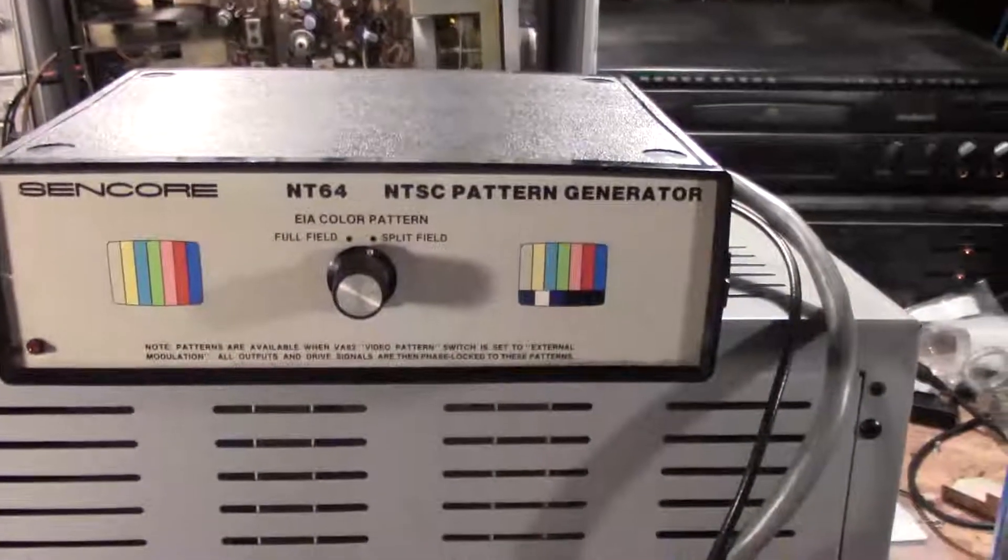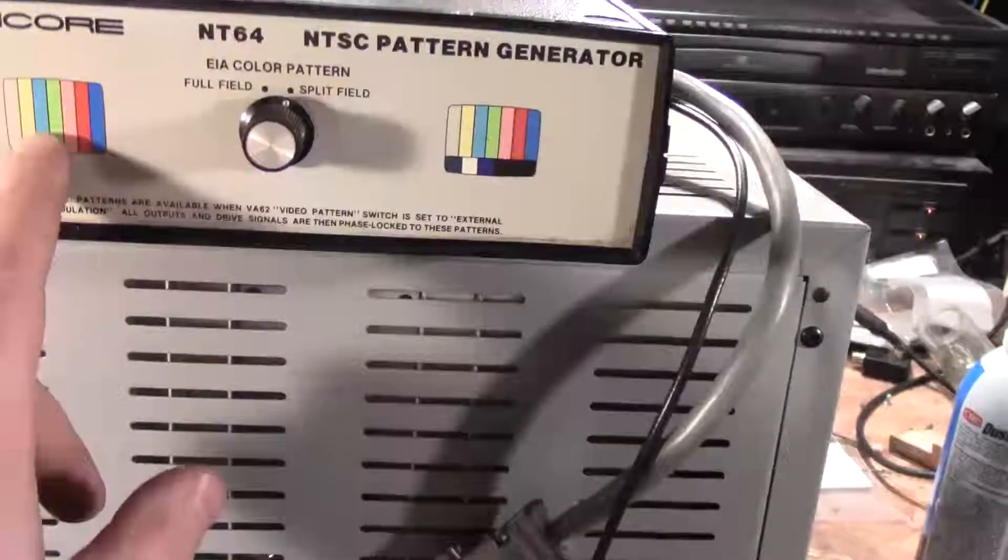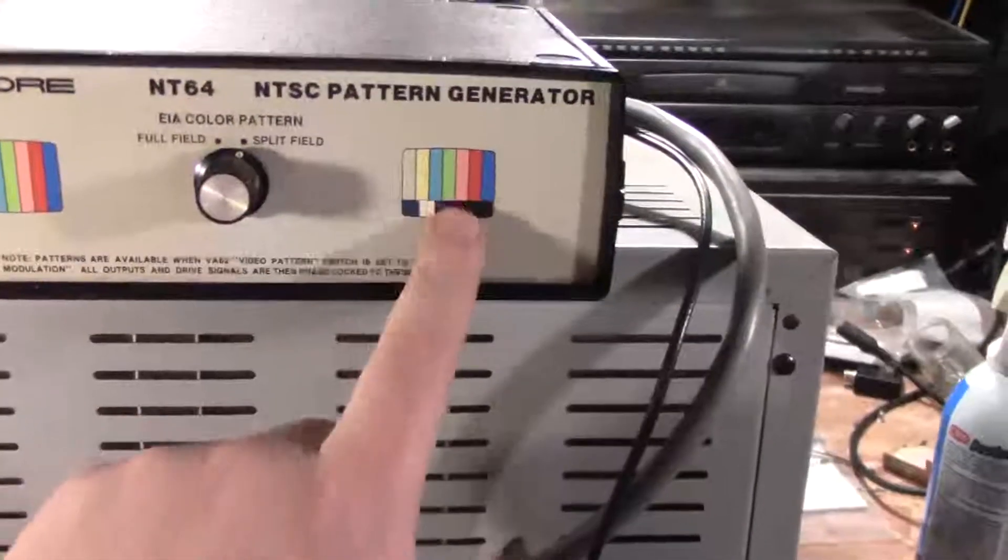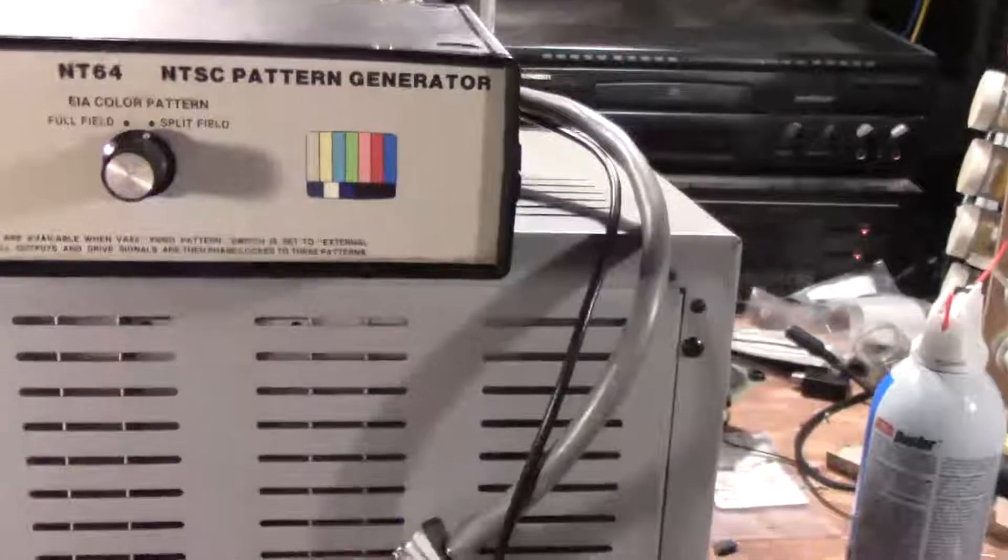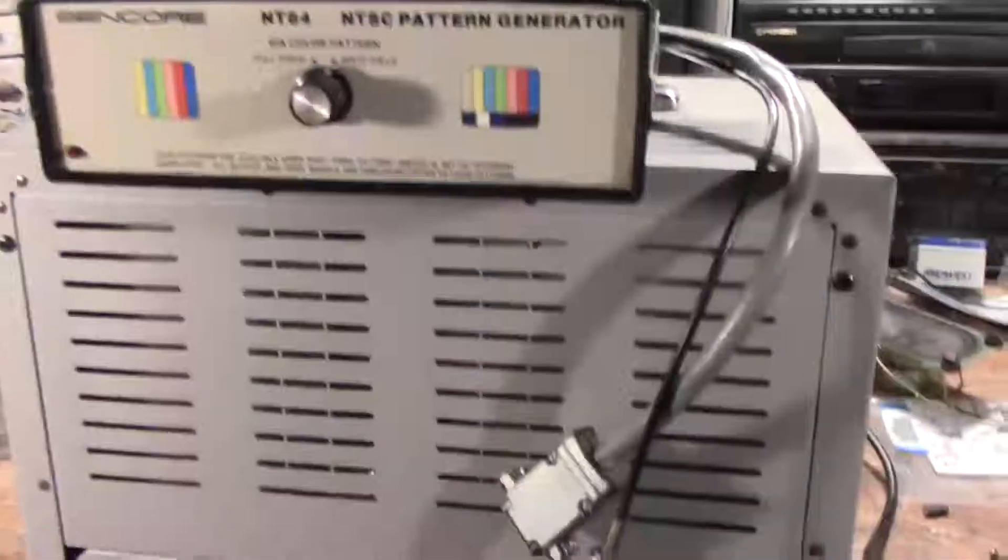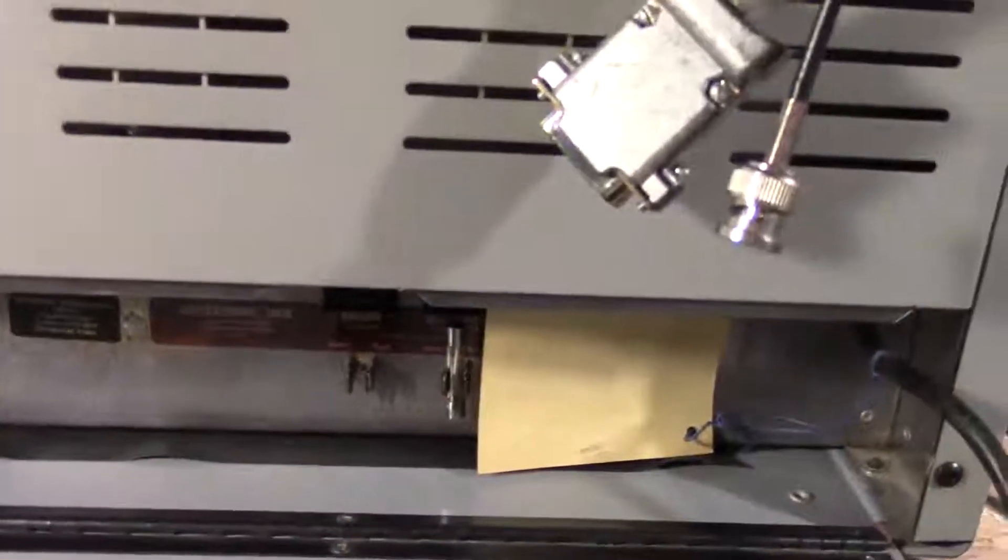Okay, I have the standard NTSC pattern generator, which selects the full field NTSC color bars or the split field with the white and black on the bottom. Now this plugs in down here, and I'm gonna show you what I'm talking about when there's an issue with how this hooks up.